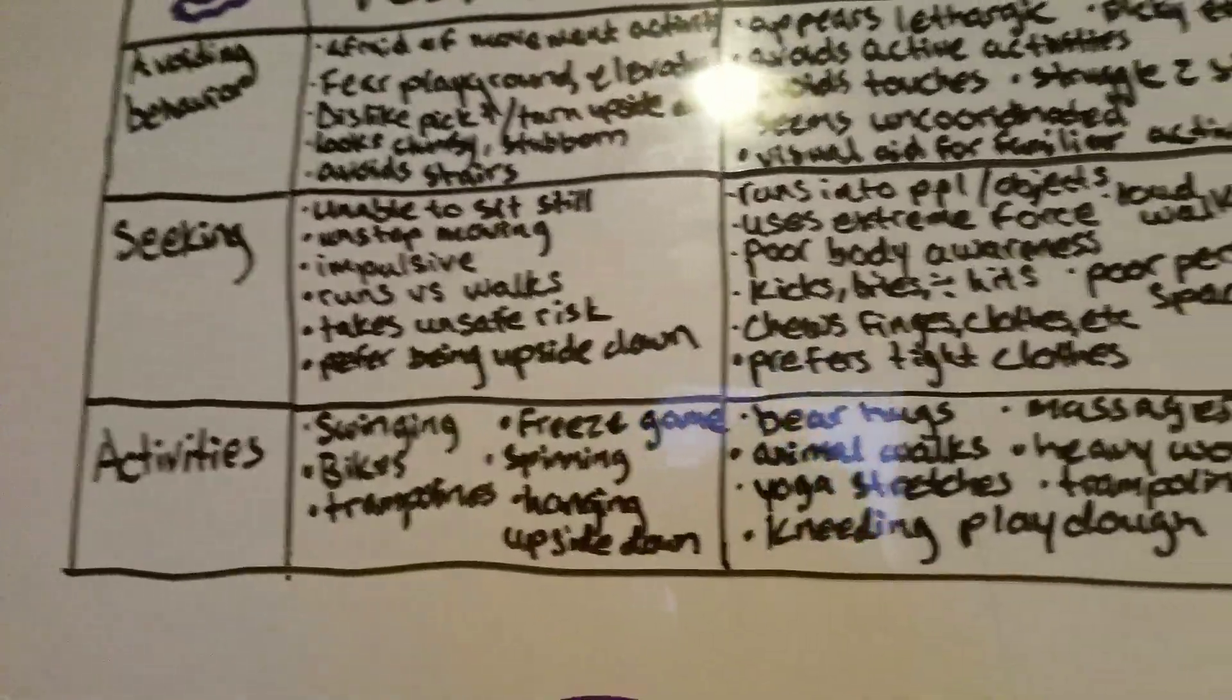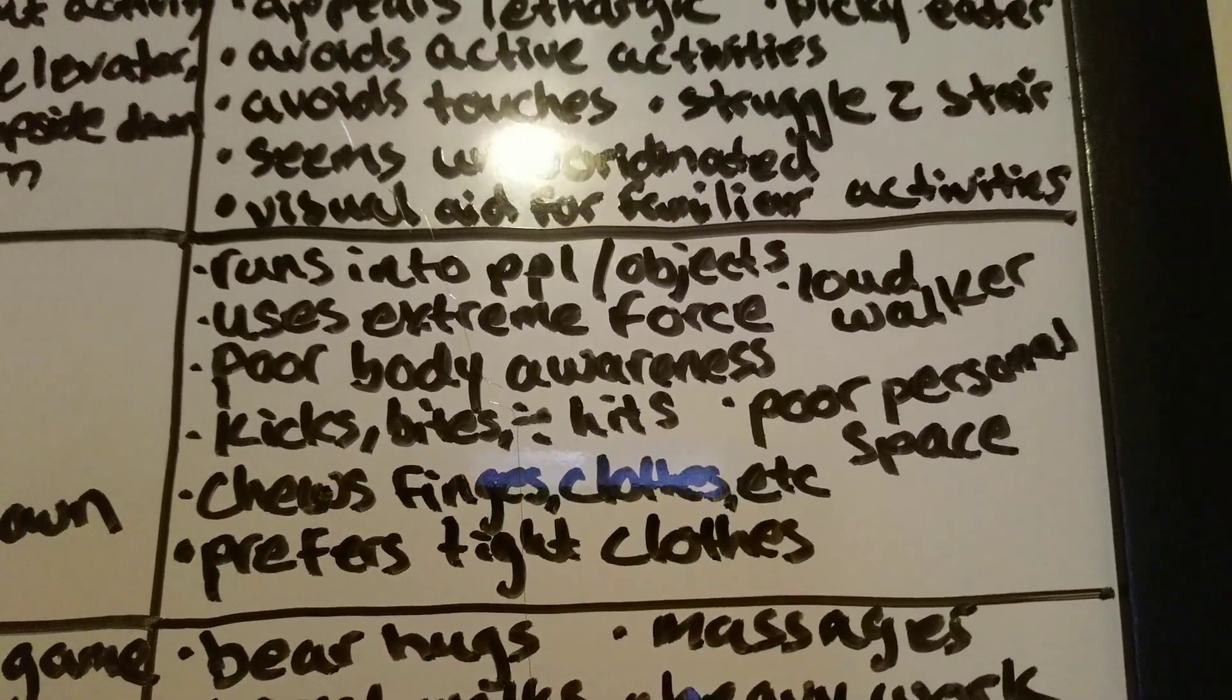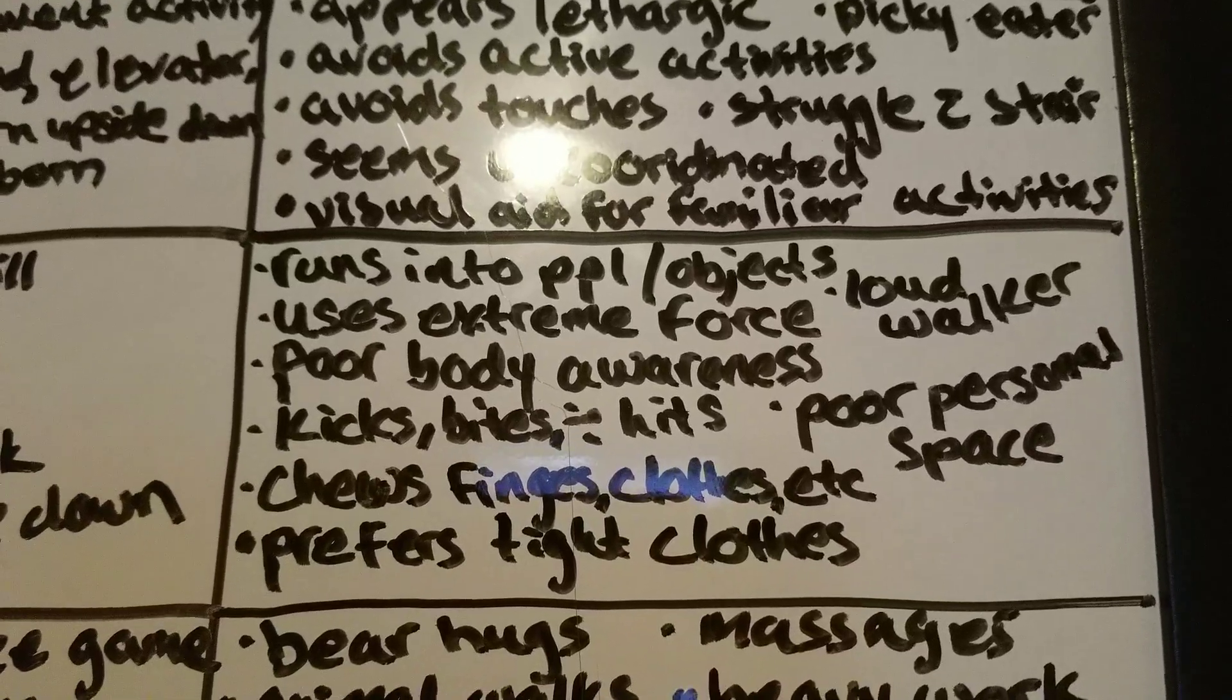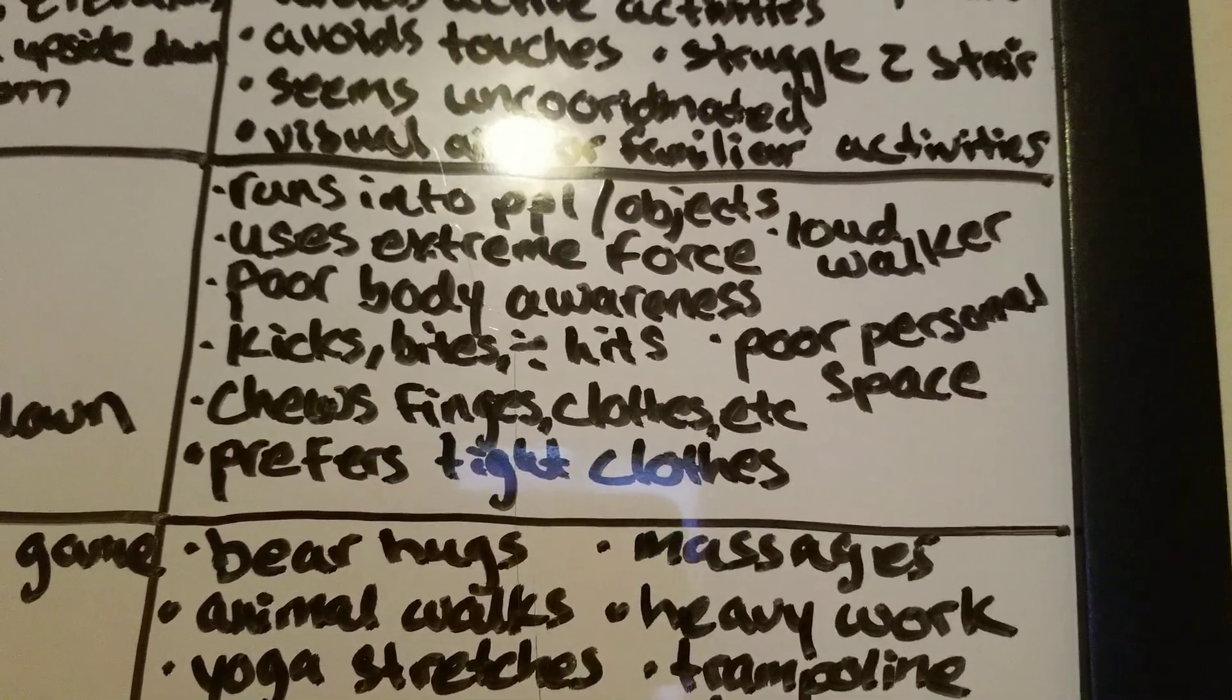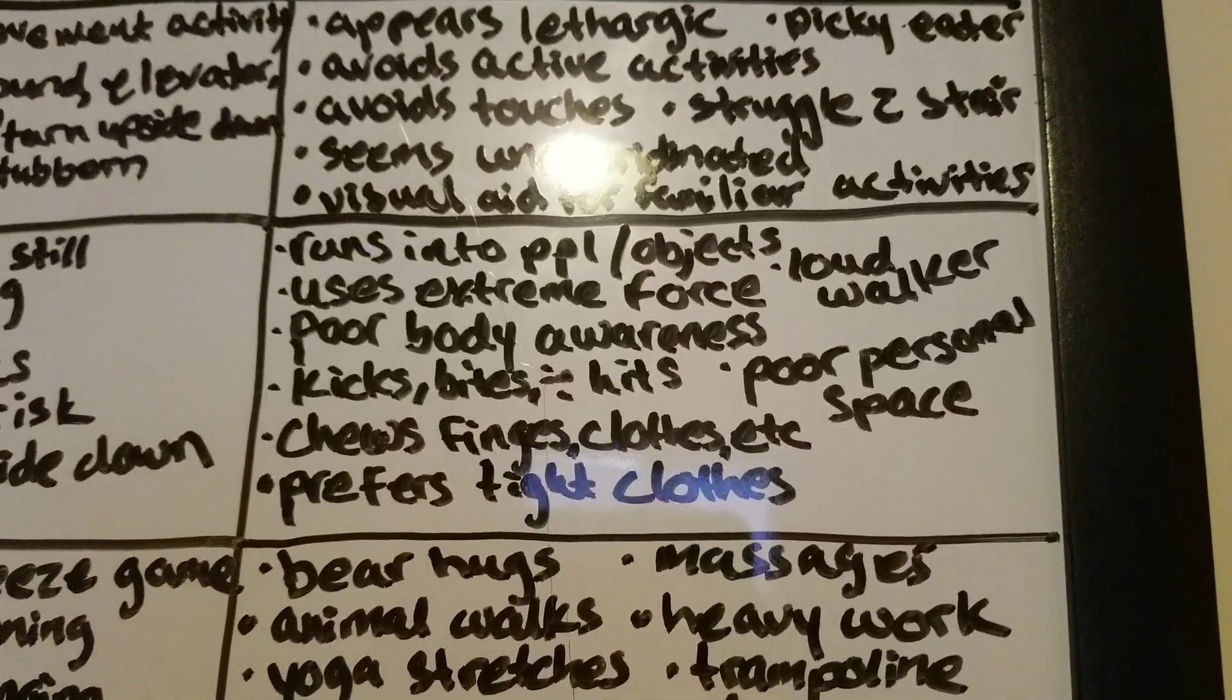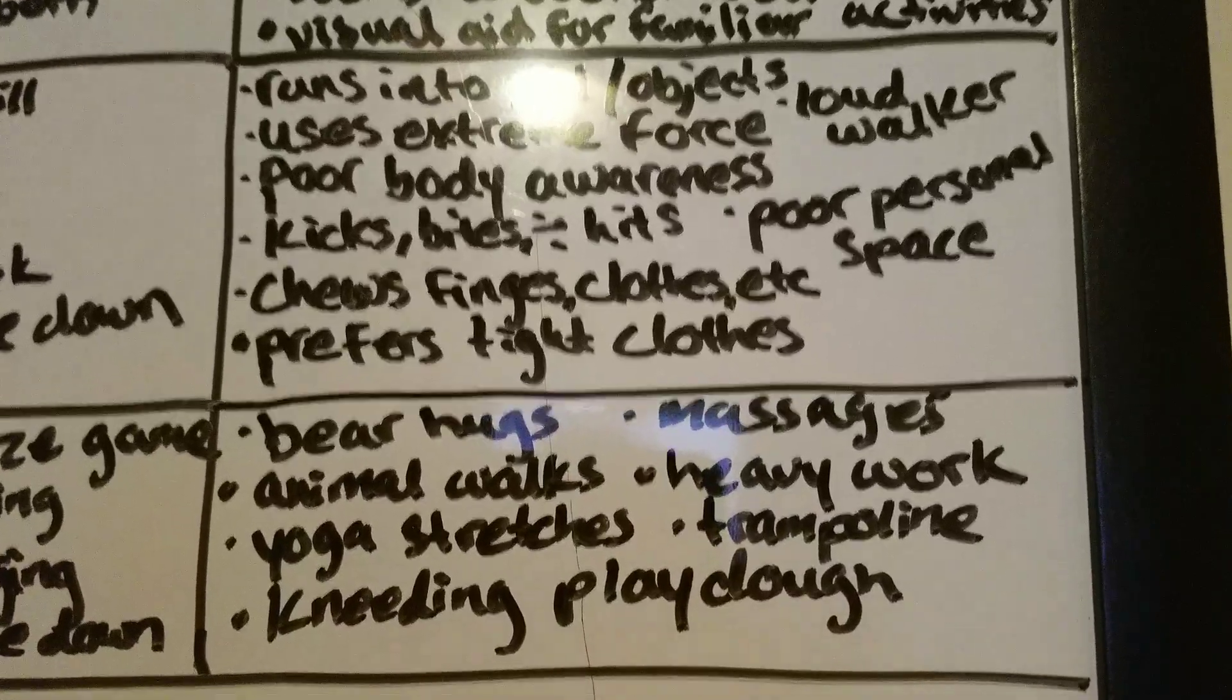Now, a child that's seeking proprioceptive input, they will run into people and objects. They use extreme force. So, these are the kids that will run really, really fast and crash into the wall. Or they will stand on top of the couch and jump onto a beanbag because they're using extreme force to get that deep pressure input.